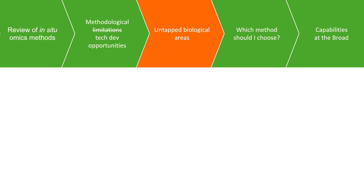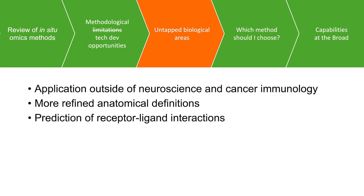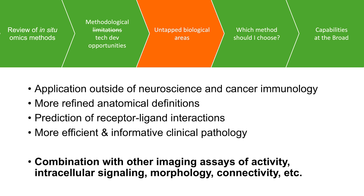There are many untapped areas: applications outside of neuroscience and cancer immunology are still basically up for grabs. Very few people have migrated tools over. As part of the human cell atlas and human tumor atlas network, we can keep refining anatomical definitions. As tools become more high-throughput in terms of transcripts profiled, we'll be better able to identify receptor-ligand interactions. I'm hoping we can eventually get to more informative and predictive clinical pathology diagnosis, and particularly excited by the possibility of merging these tools to generate multimodal pictures of the same cell.